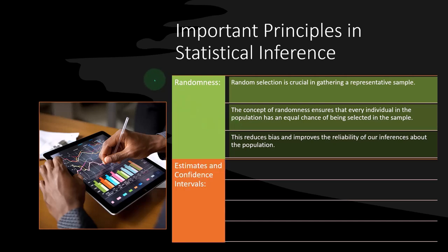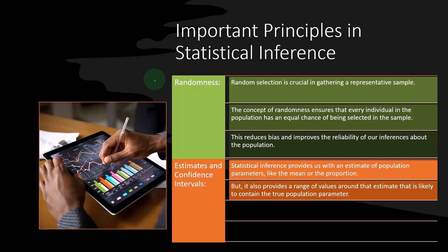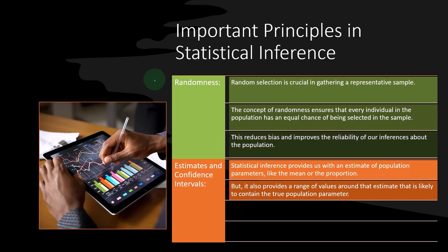So estimates and confidence intervals. Statistical inference provides us with an estimate of population parameters like the mean or the proportion. But it also provides a range of values around the estimate that is likely to contain the true population parameter. This range is called the confidence interval and the likelihood that this interval contains the true value is called the confidence level.